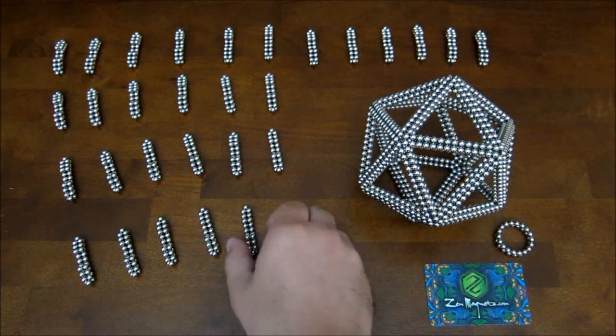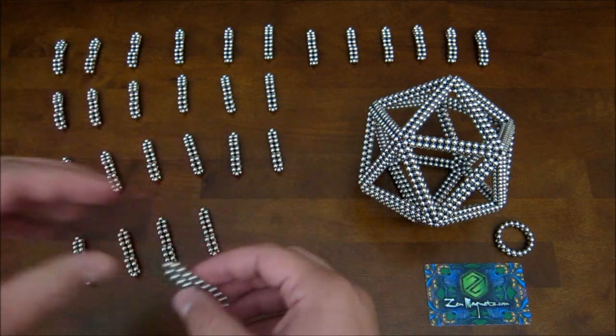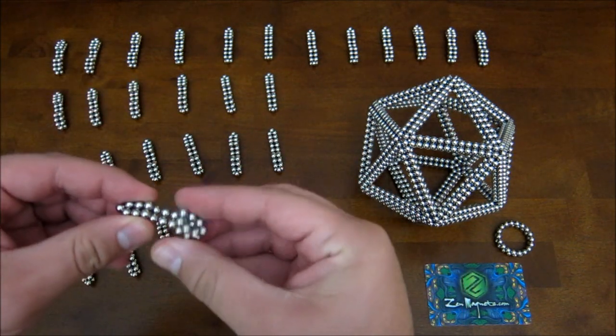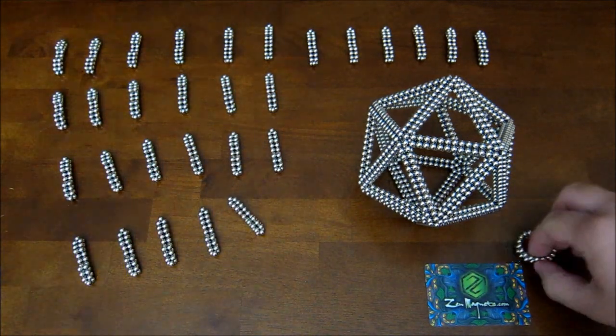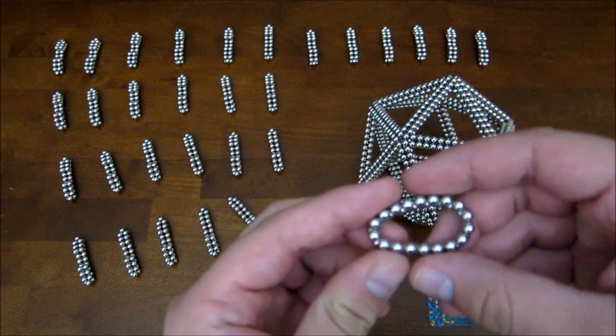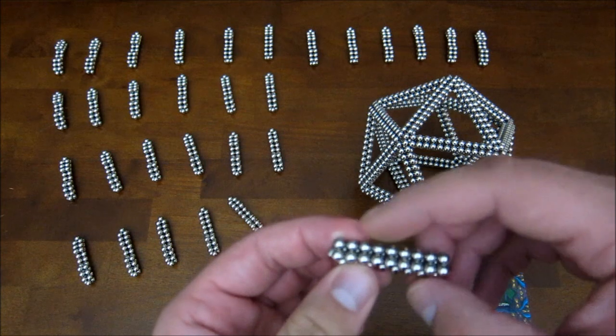Also, you need 30 of these pieces here, and the way you make those is by taking two stacked rings of 18 magnets, flattening them out into a long straight piece, which is going to be nine magnets long on the top.